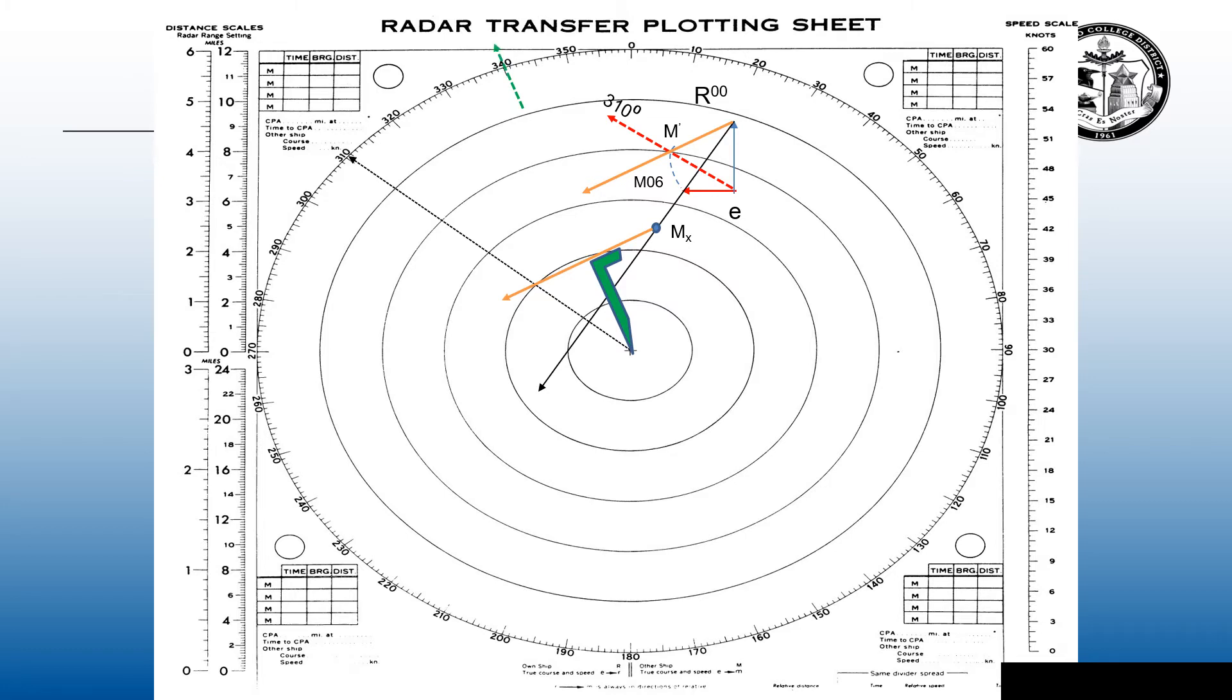So when they altered course from 270 to 310, they opened up their CPA for me from 1.8 miles to just under 4 miles bearing 340 degrees.